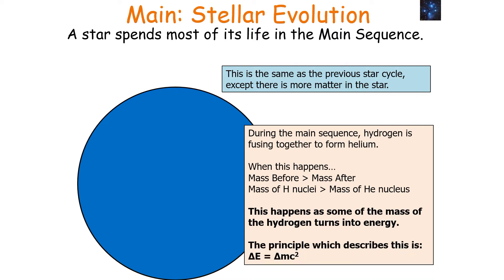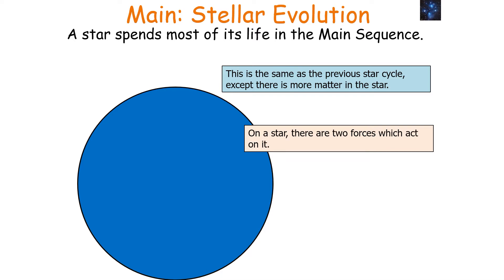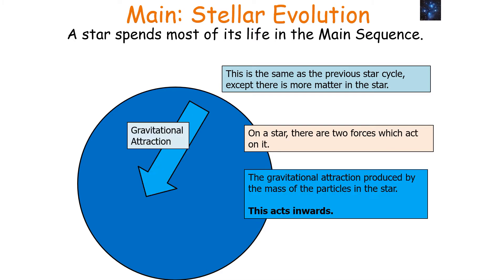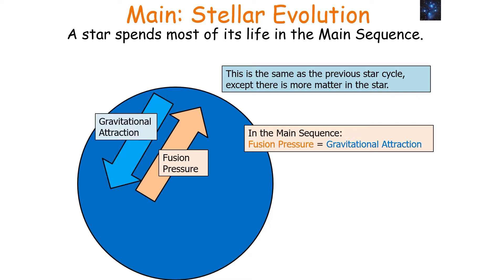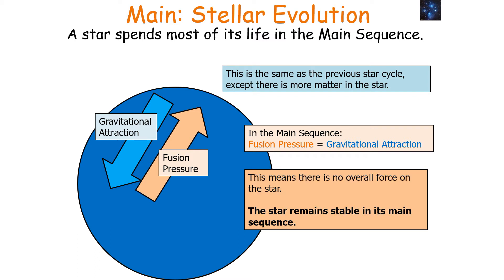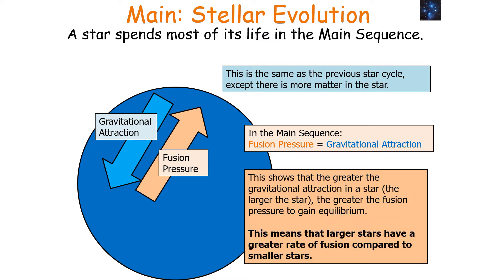This energy is released as electromagnetic radiation from the star. The principle which describes this is ΔE = ΔMC². On your star, there are two forces: the gravitational attraction produced by the mass of the particles in the star, which acts inwards, and the fusion pressure force produced by the products of fusion escaping the star, which acts outwards. In the main sequence, these two forces equal each other, meaning there's no overall force on the star, so it remains stable.